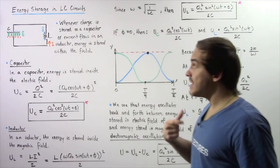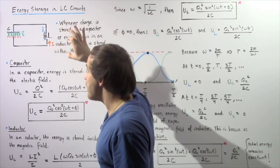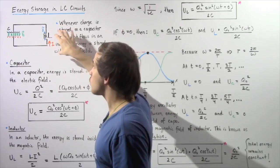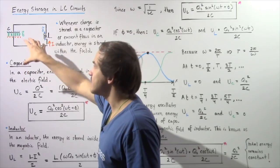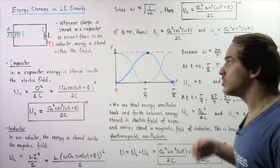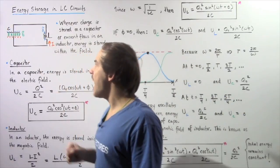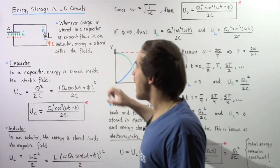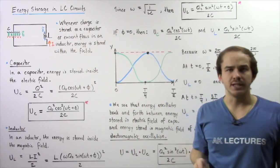When our electric current is at a maximum, all that energy is stored inside our inductor and no charge lies on the capacitor, so no energy exists inside our capacitor. But when our electric current goes to zero, all the charge is stored on our capacitor, meaning all the energy is stored on our capacitor and no energy is stored within the magnetic field of our inductor.